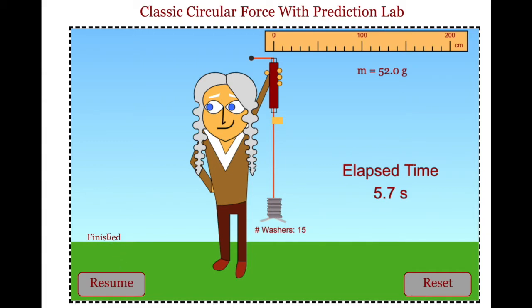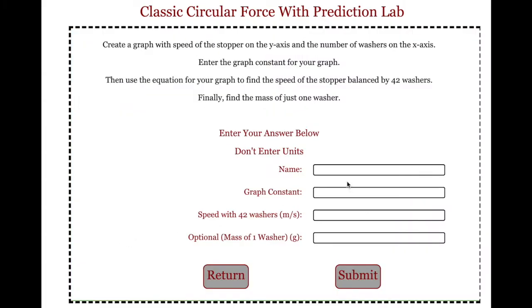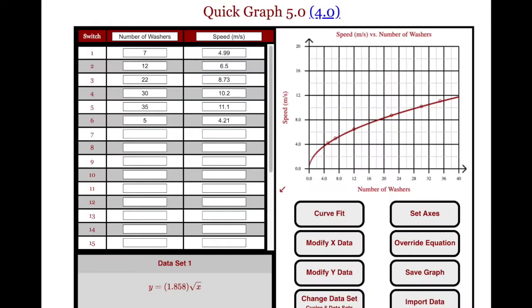They should go back to their program, click on finished, type in their name, type in the graph constant, so in this case it would be 1.858.